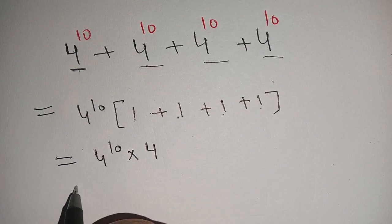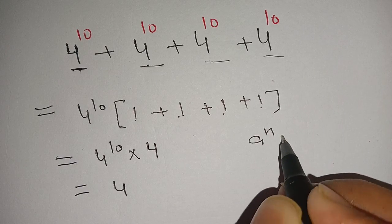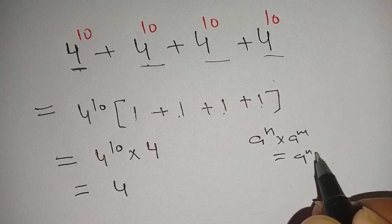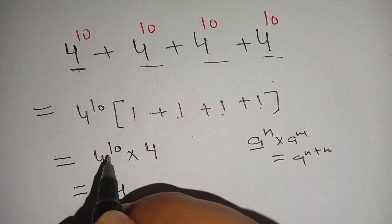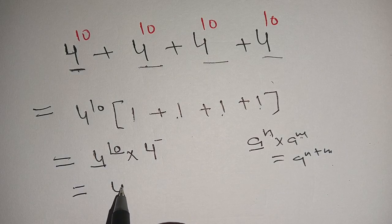Now we have 4^10 times 4^1. We know that if a^n times a^m equals a^(n+m). Here a=4, n=10, and m=1. Now we have 4^(10+1) which equals 4^11.